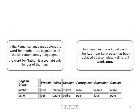Here we have a table with English words 'mother' and 'father', and six Romance languages that originated from Latin: French, Italian, Spanish, Portuguese, Romanian, and Catalan. 'Mother' in French is 'mère', Italian 'madre', Spanish 'madre', Portuguese 'mãe', Romanian 'mamă', and Catalan 'mare'. The word for mother is a cognate in all six contemporary languages.